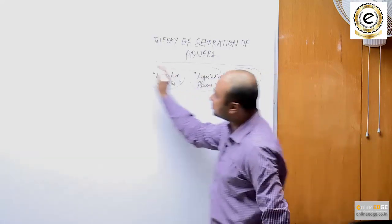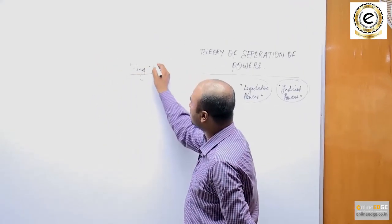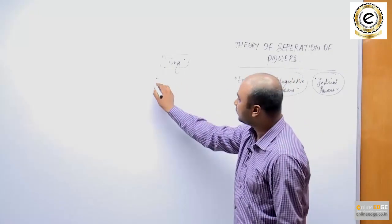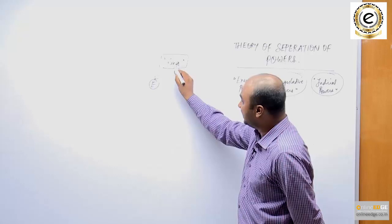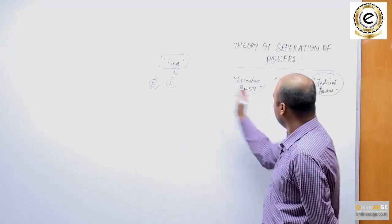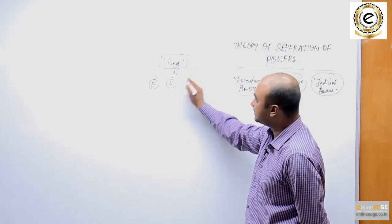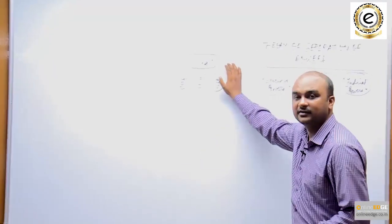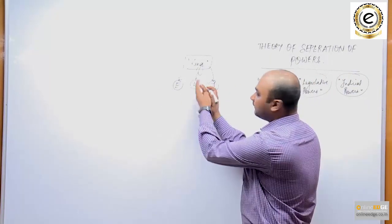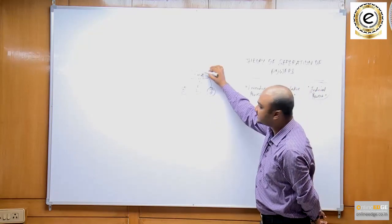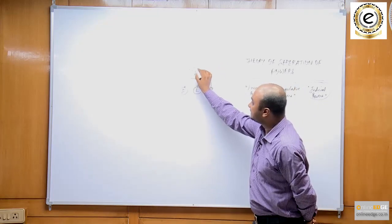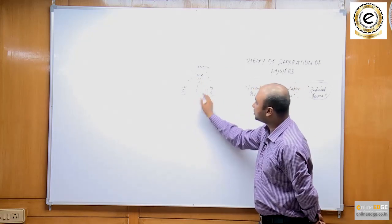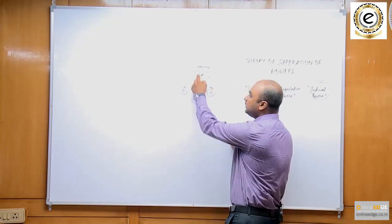To understand this more properly, let's consider a society where there is a supreme king or queen — a monarch. His order is the supreme order, so he has all absolute executive powers. Similarly, his word is the law — whatever the king says becomes law — so he has supreme legislative powers, and he is the fountain of justice. When there is a dispute between any of the subjects in the kingdom, they go to the king to seek justice. So all the powers of government — executive, legislative, and judicial — are vested in the king or the monarch.